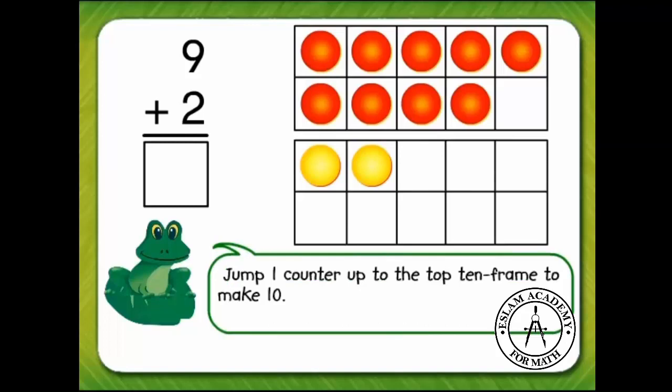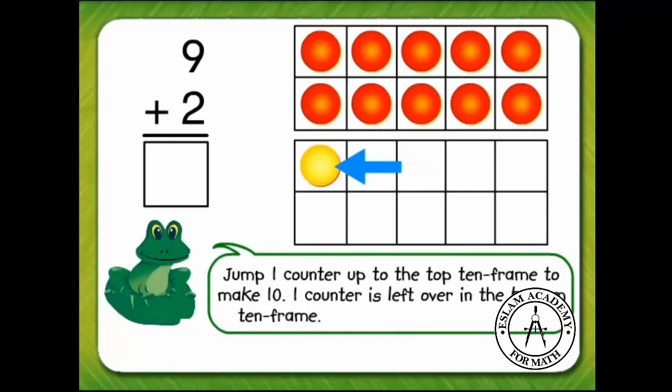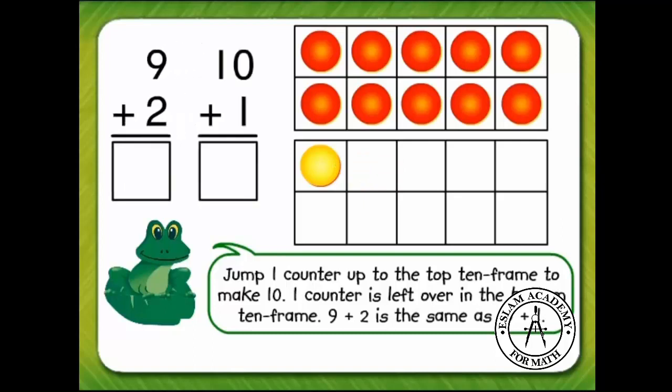Jump one counter up to the top 10 frame to make 10. One counter is left over in the bottom 10 frame. 9 plus 2 is the same as 10 plus 1. 10 plus 1 is 11. And 9 plus 2 is 11.